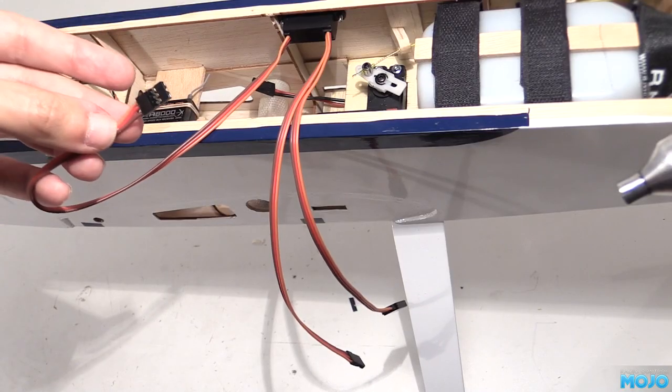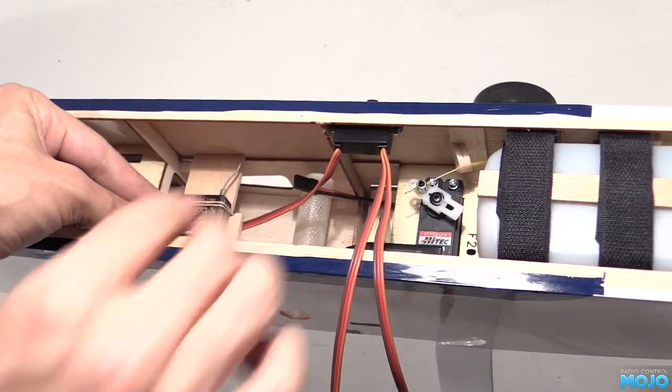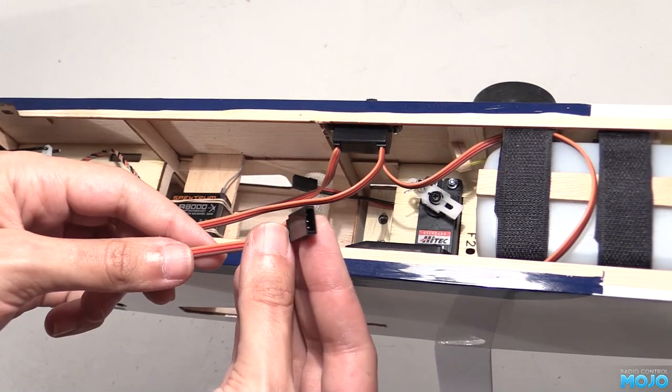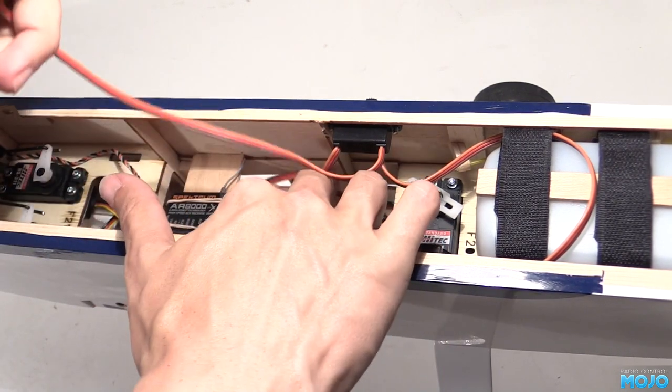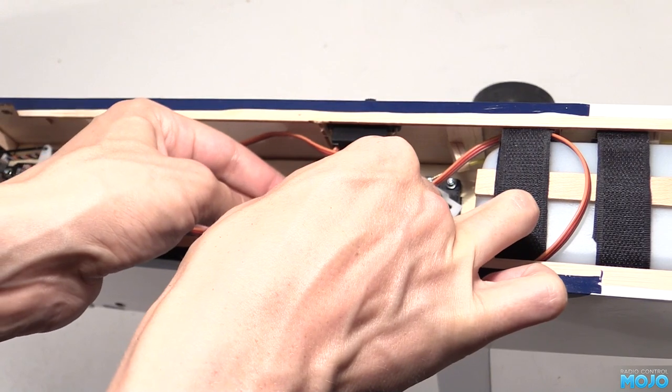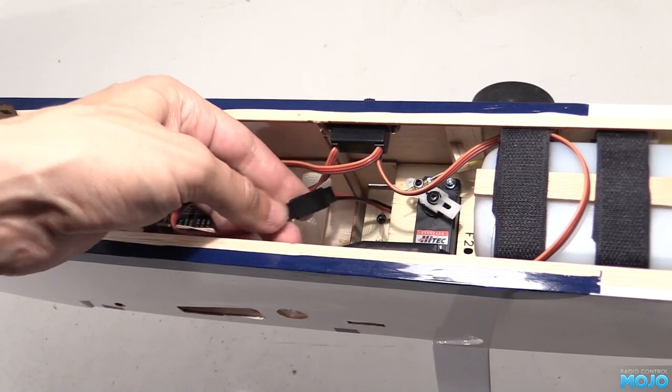The lead on its own is the power out so it just plugs into a spare slot on the receiver. The power and grounds are all bussed so it doesn't matter which one you pick. At the other end of the switch there's two leads. The battery will plug into one, leaving the charge lead. It needs to get packed away neatly so it's not flapping around in the fuselage. It tucks nicely under the velcro straps.